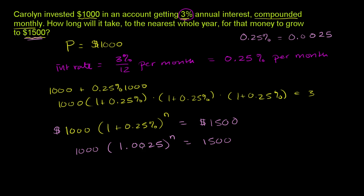We can divide both sides by 1,000 and you get 1.0025 to the n is equal to 1,500 over 1,000, which is just equal to 1.5.